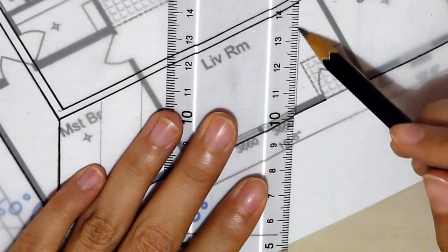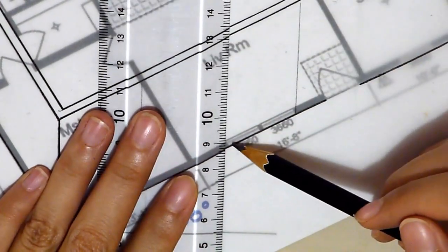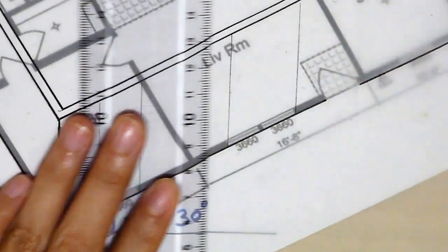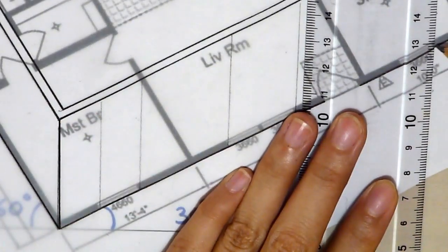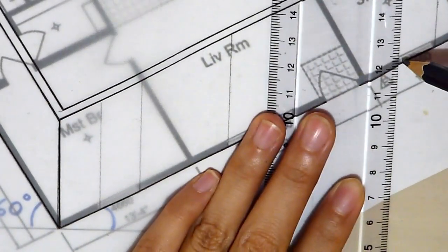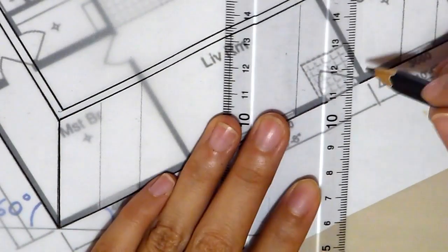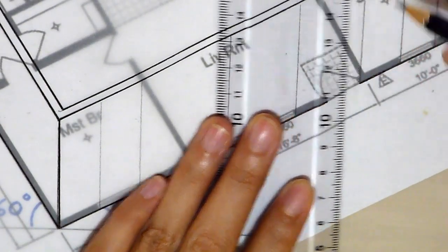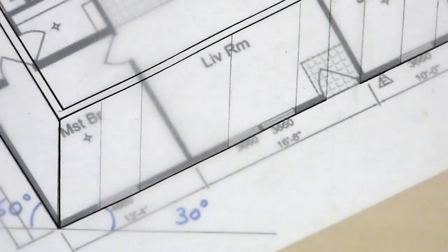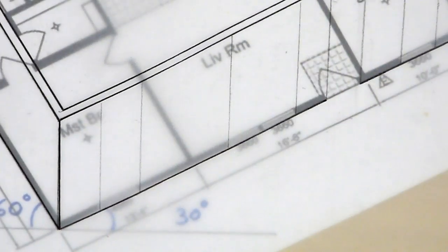I'm doing the windows now. So I'm just projecting the vertical lines as reference. So once you have all the vertical lines drawn, you can then measure according to the elevation.